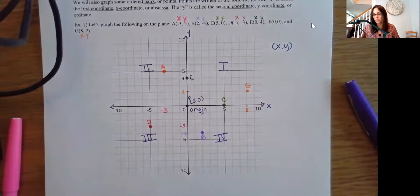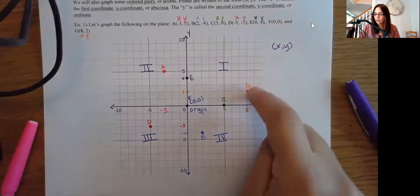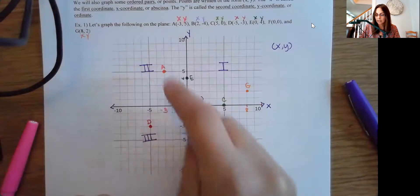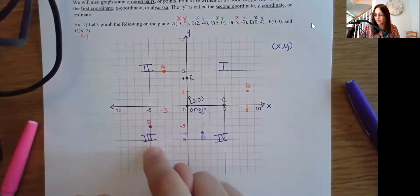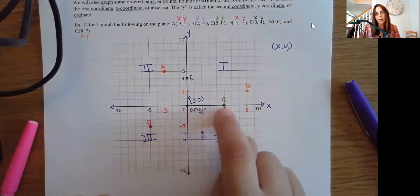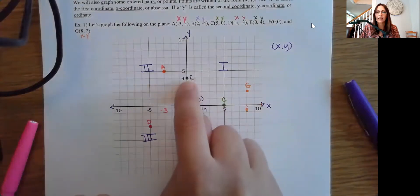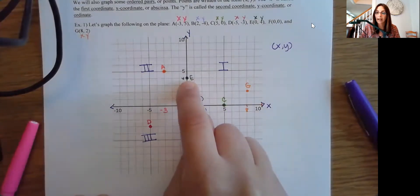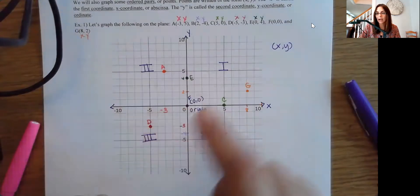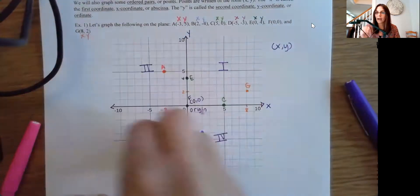Notice that some points are on the axes and some are in the quadrants. Point G is in quadrant I, A is in quadrant II, D is in quadrant III, and B is in quadrant IV. Point C is not in a quadrant — it's on the x-axis. Point E is on the y-axis, and the origin is on both axes, but again not in a quadrant.